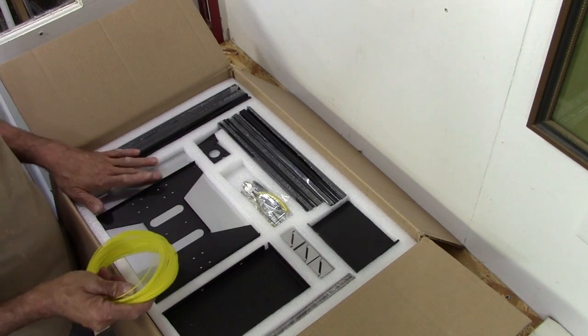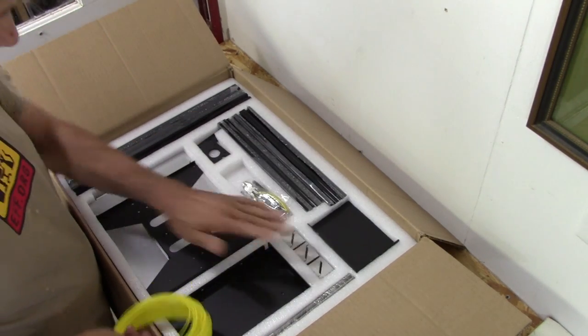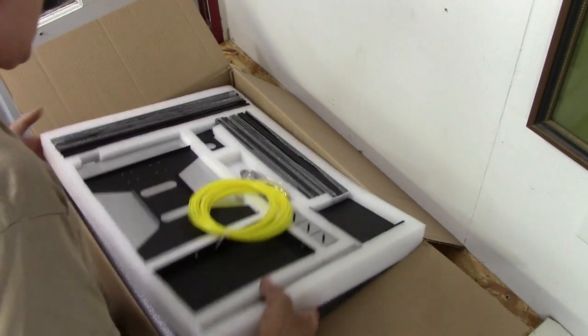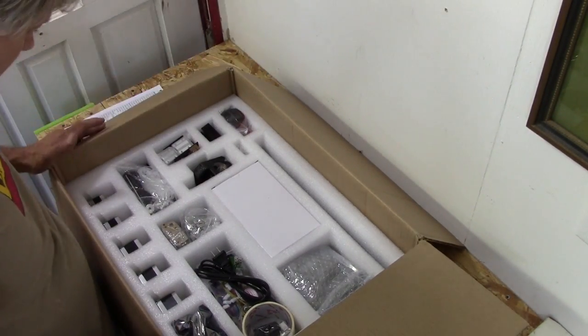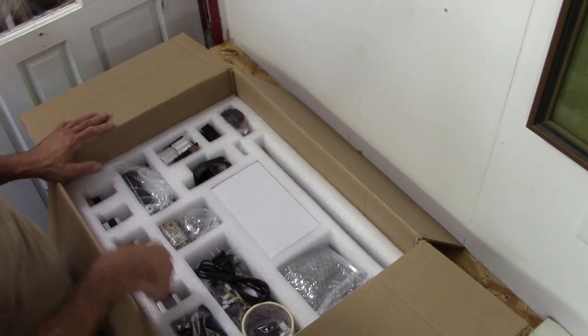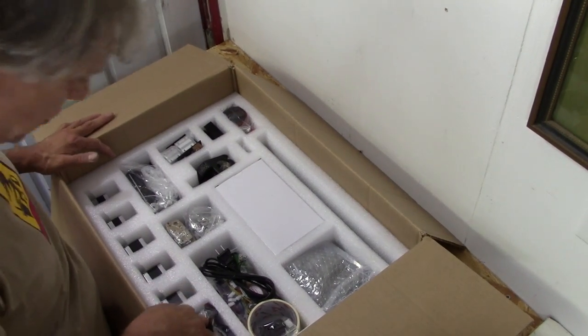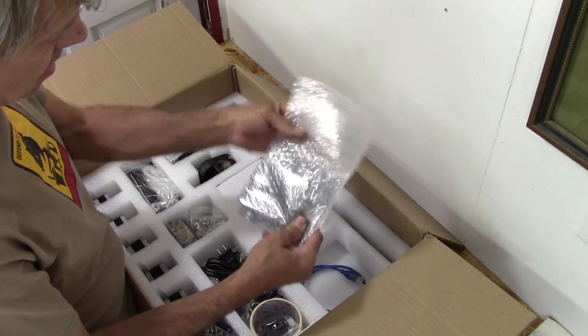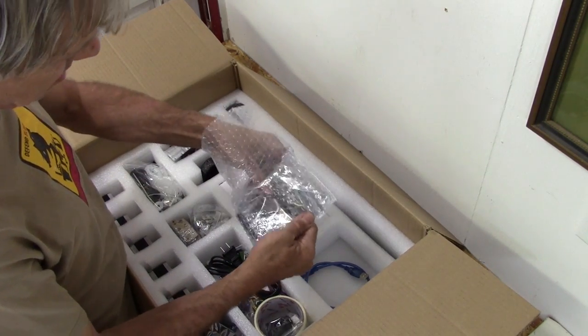This is the print bed - it's heated. These are all the rails. Let's take this layer out and set it over here on the other bench. We've got another layer with more smaller parts, stepper motors here, control cables, more cables here.